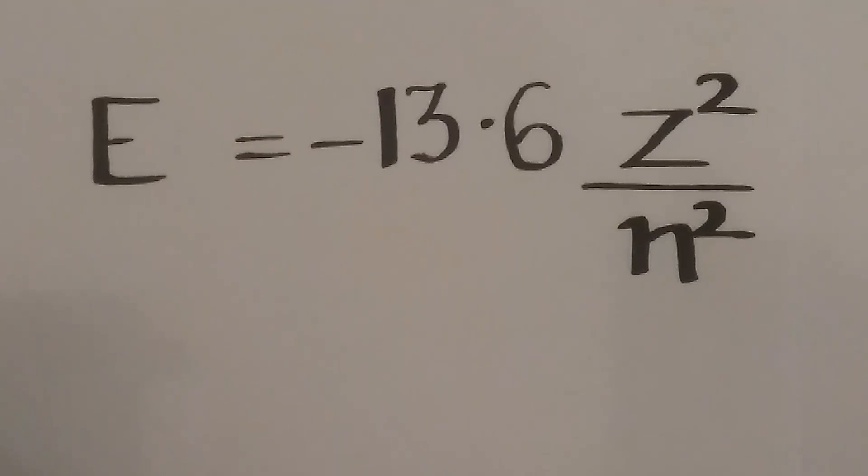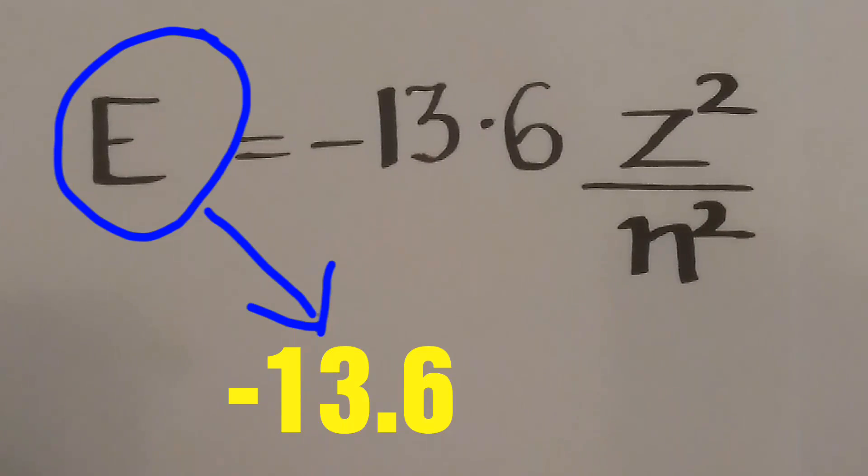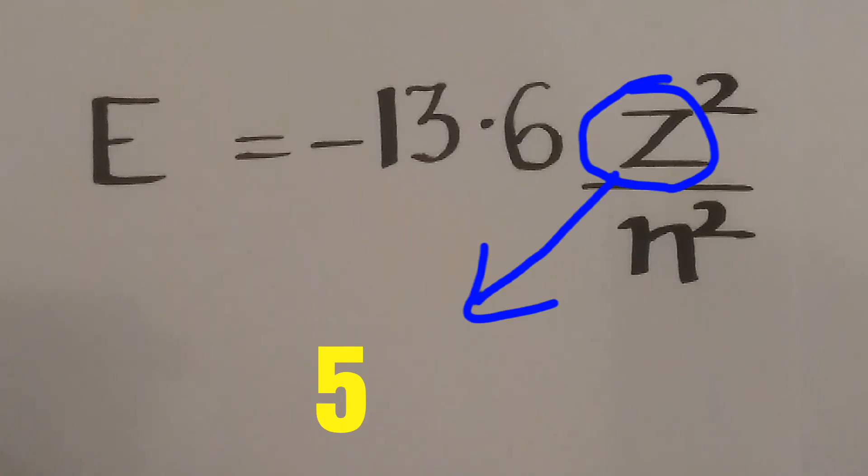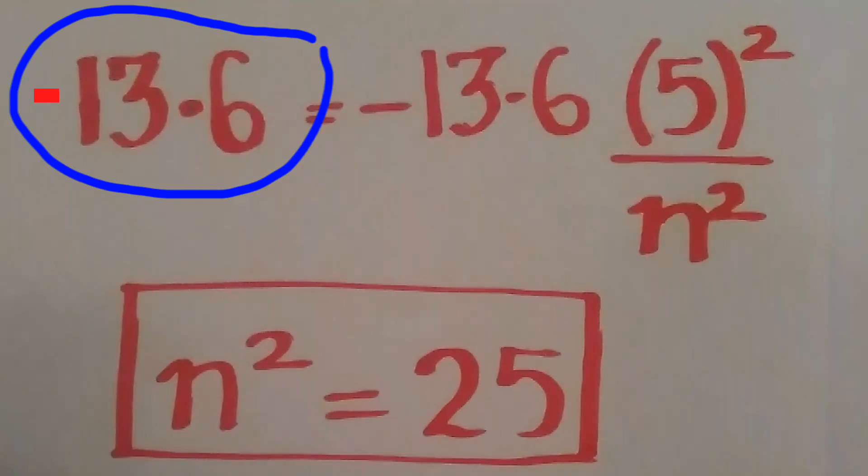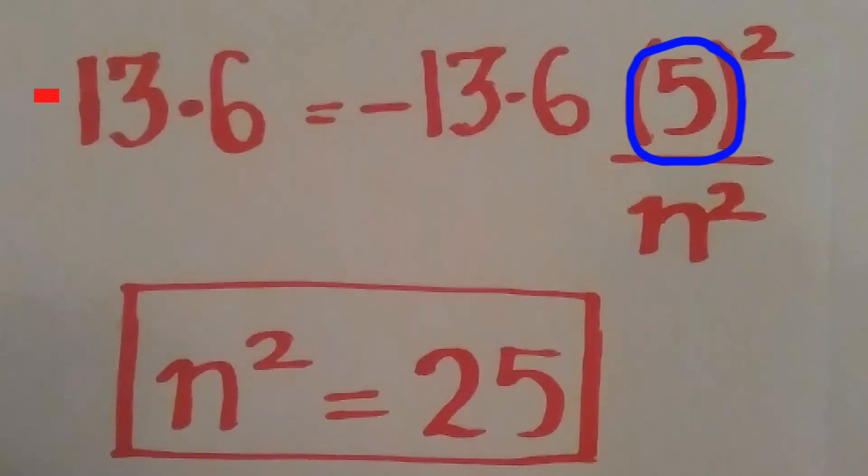In our question, energy is given as negative 13.6 and Z is given as 5. Substituting the values of energy and the nuclear charge and solving, we get the value of n squared as 25.